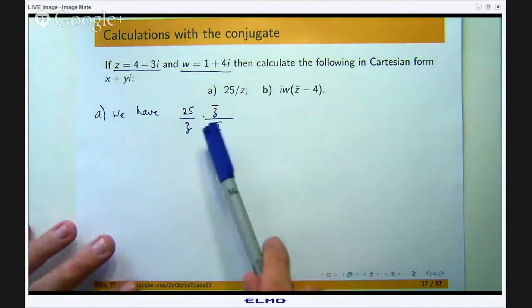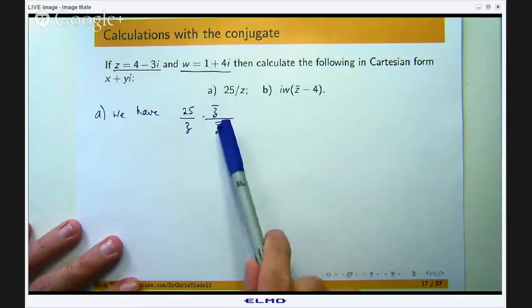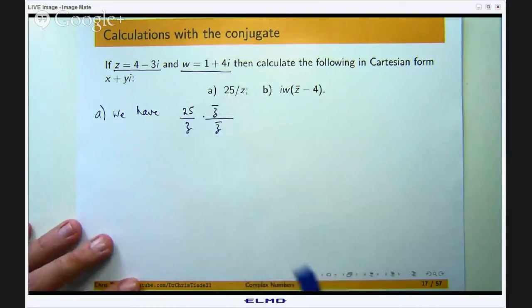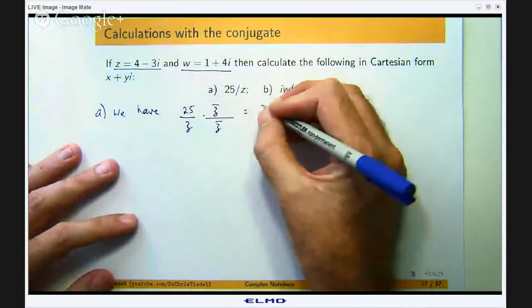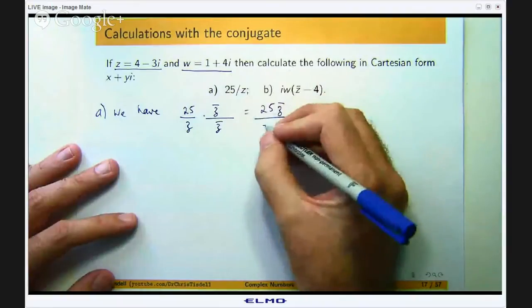So Z bar all over Z bar. Now if you wanted to you could write 4 minus 3i down there, 4 plus 3i there, 4 plus 3i there and then expand all the brackets out.